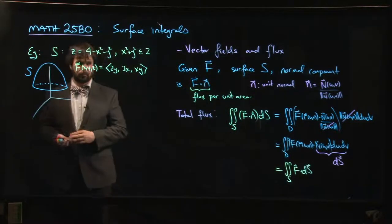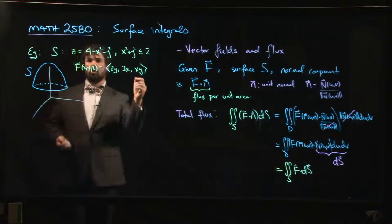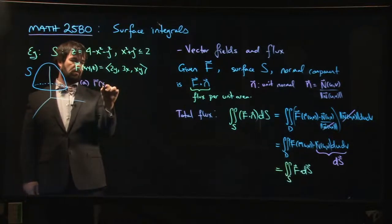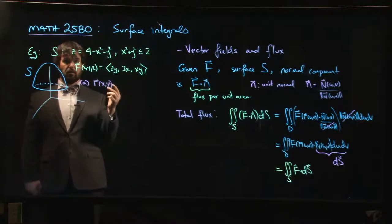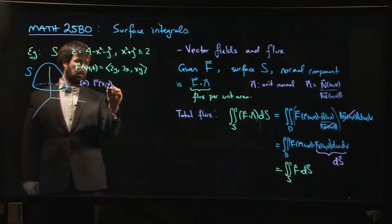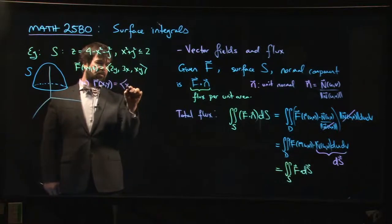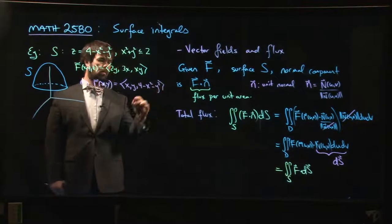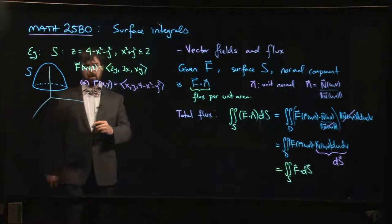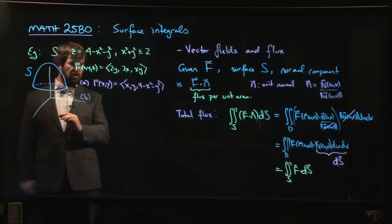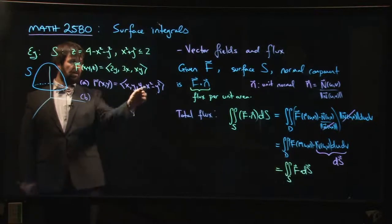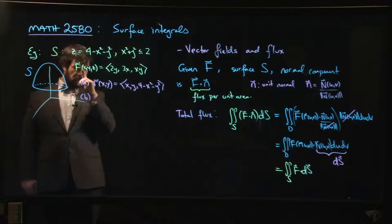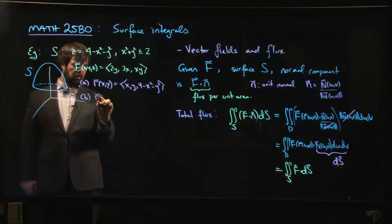Now there are two choices for parametrization here. A natural parametrization to use whenever your surface is given as a graph, as this one is, where z is written as a function of x and y, a natural choice is to just use x and y as parameters: x, y, z is 4 minus x squared minus y squared. That's one option. And then you have to also specify the domain, so in this case the domain would be x squared plus y squared less than or equal to 2.